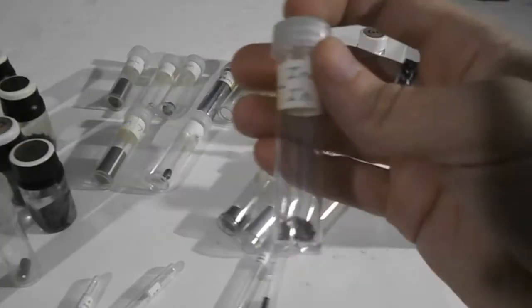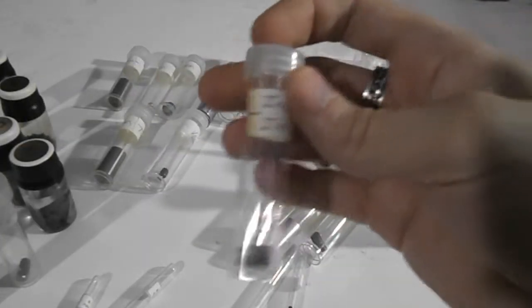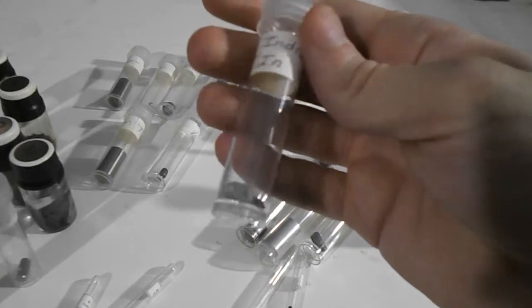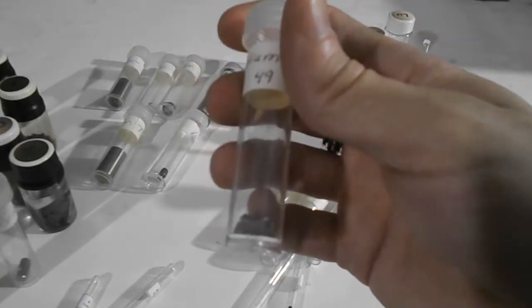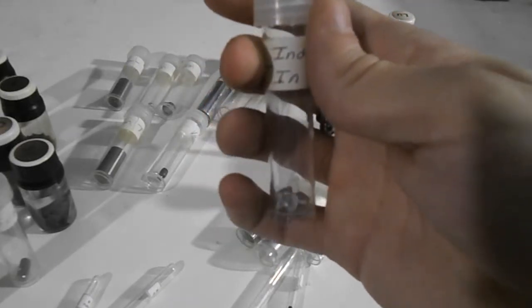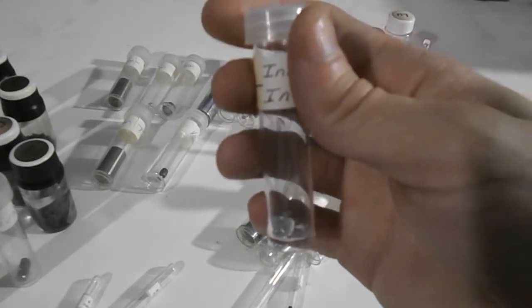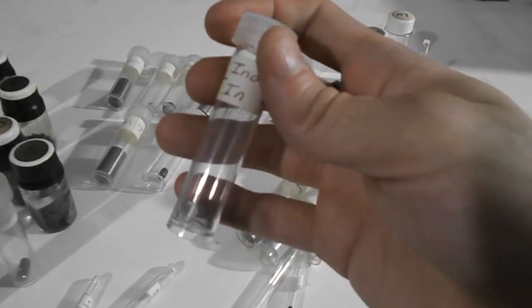This here is indium, which is a very soft metal. It's 49 on the periodic table. It is so soft that you can cut it with a knife and dent it with your fingernail.